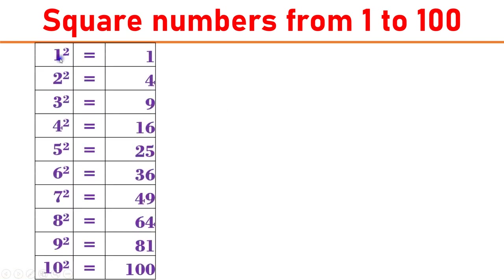1 square equals 1. 2 square equals 4. 3 square equals 9. 4 square equals 16. 5 square equals 25.